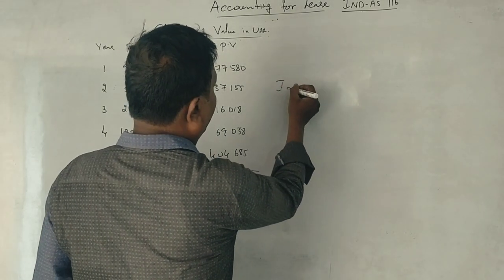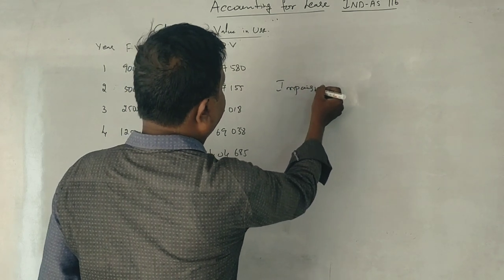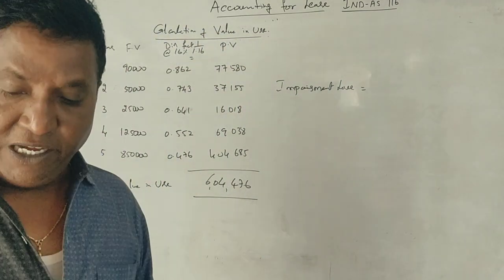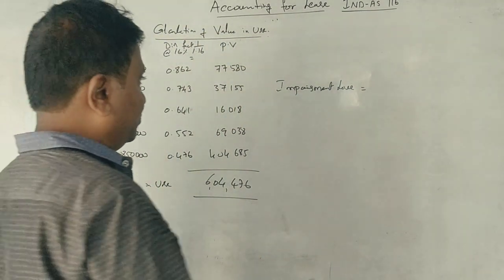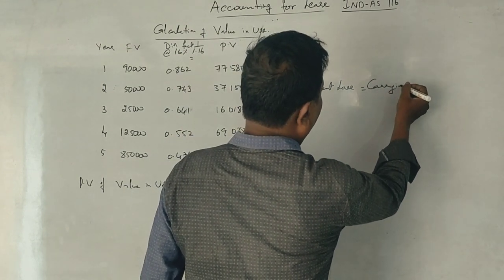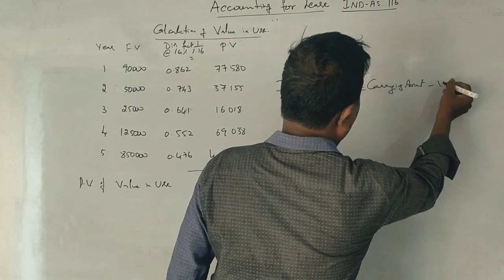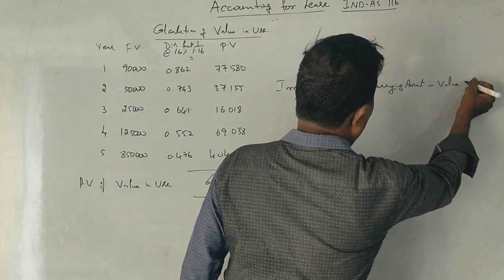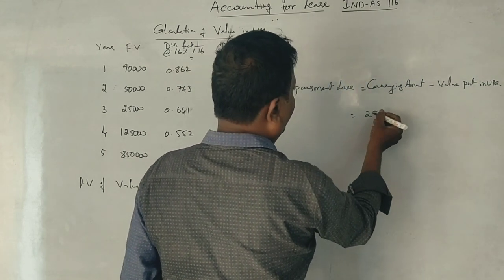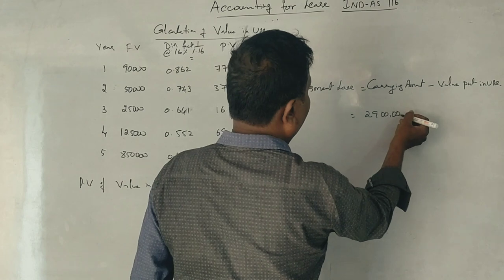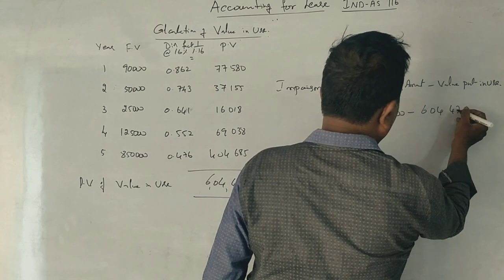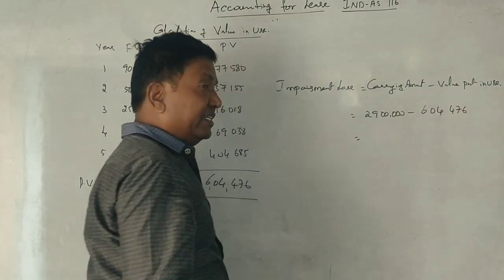Now we write the impairment loss. Impairment loss equals carrying value minus value in use. Carrying value is 29 lakhs, value in use is 6,04,476.